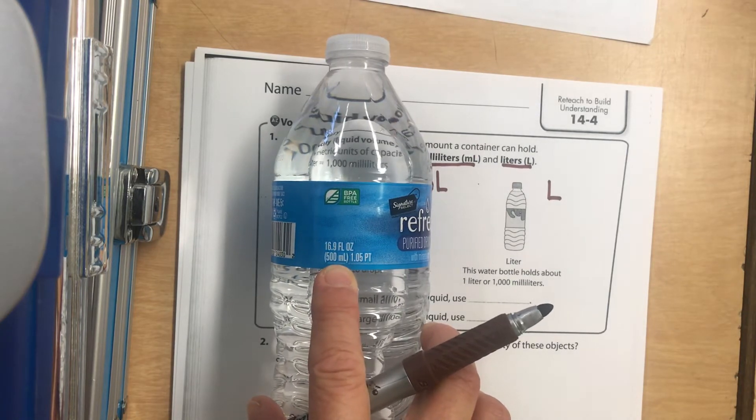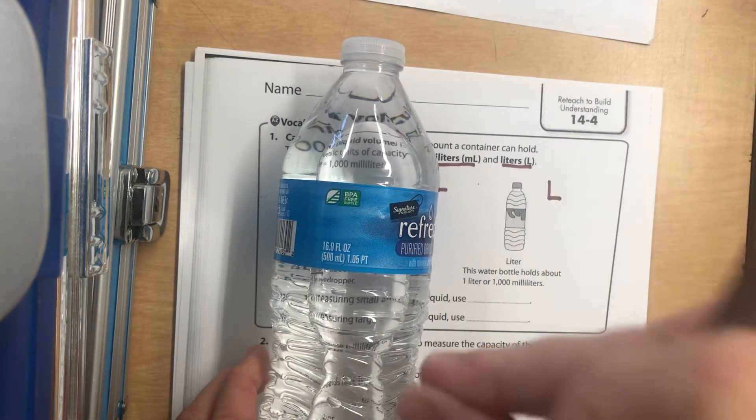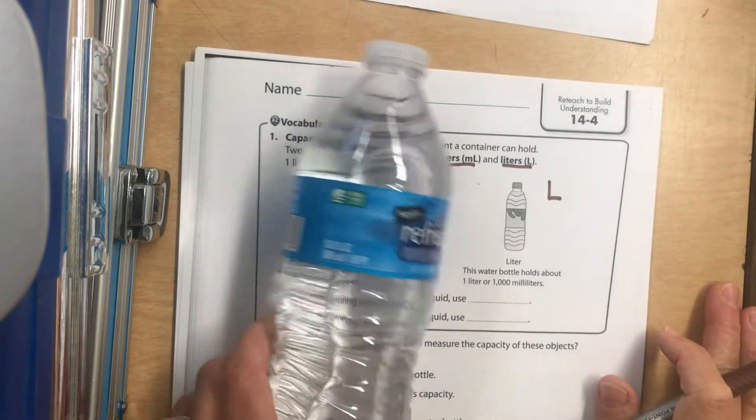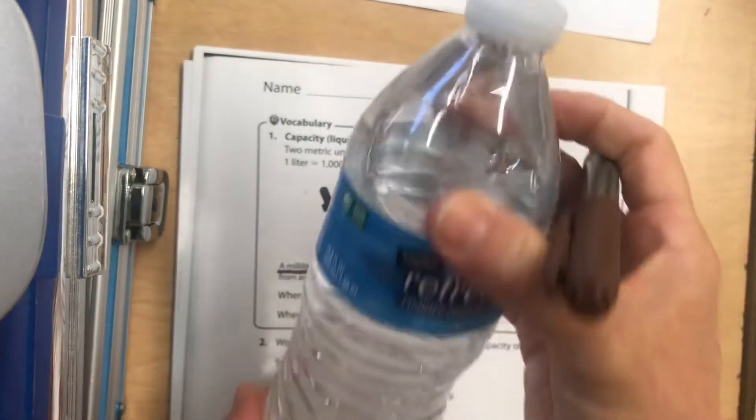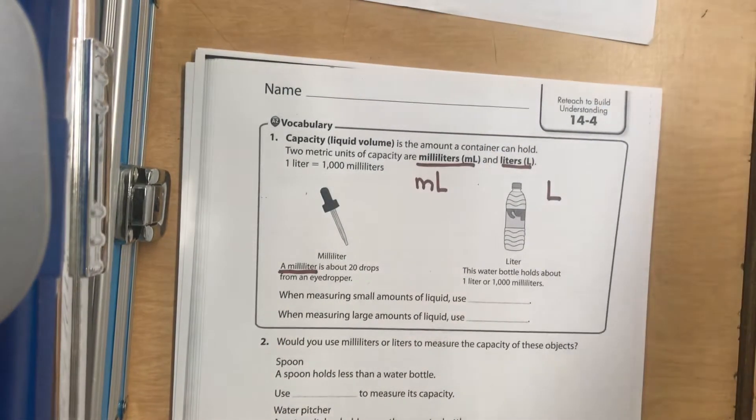So this is like 500 eyedroppers. If you took an eyedropper and you squeezed it out 500 times, you would fill this bottle. That would take a really long time. So one liter is going to be about two of these, which is kind of like a bigger water bottle. One of your bigger water bottles is going to be about a liter.